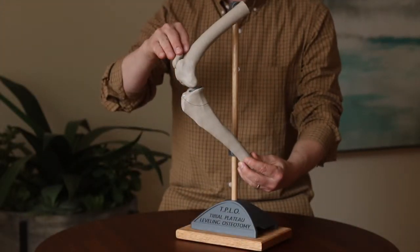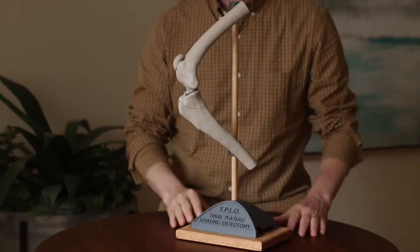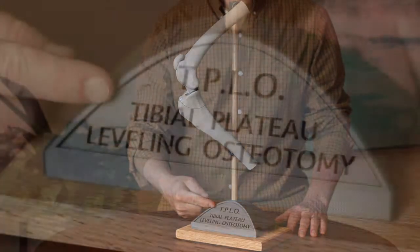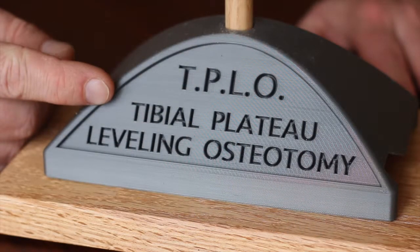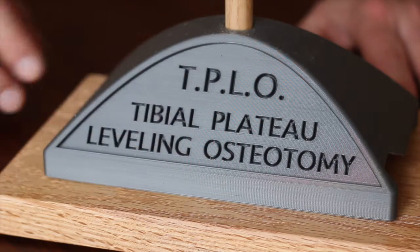So the next portion of the surgery is to stabilize the knee to prevent this shifting from occurring, and the surgery we use to accomplish that is called a TPLO—stands for tibial plateau leveling osteotomy.